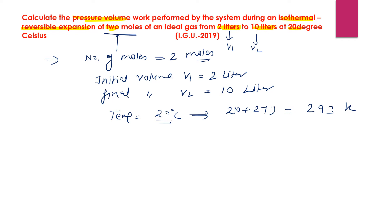For isothermal expansion, the formula for maximum work is: W_max = -2.303 nRT log(V2/V1). The change is in volume, so we use V2/V1. All the given values are available, so we substitute them.